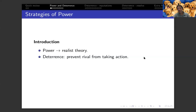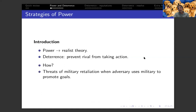So what is deterrence? Deterrence is the use of threats by one party to convince another party to refrain from initiating some course of action. A threat serves as a deterrent to the extent that it convinces the target not to carry out its intended action because of the cost that it will incur. In most cases, deterrence refers to threats of military retaliation against an adversary — the application of power — in an attempt to prevent it from using its own military to promote foreign policy goals.